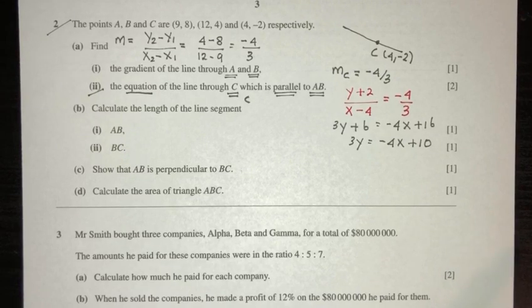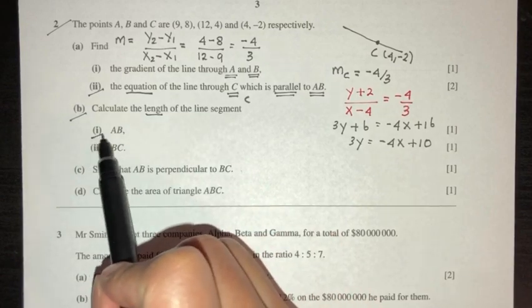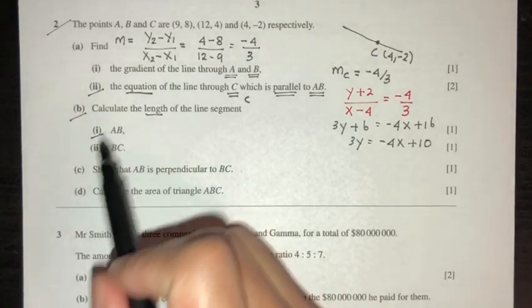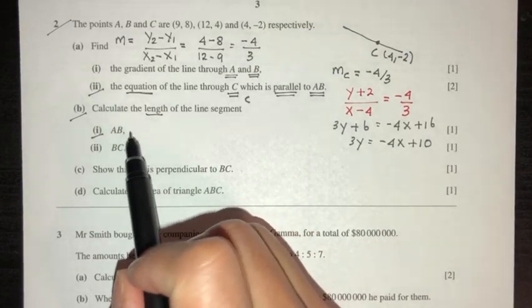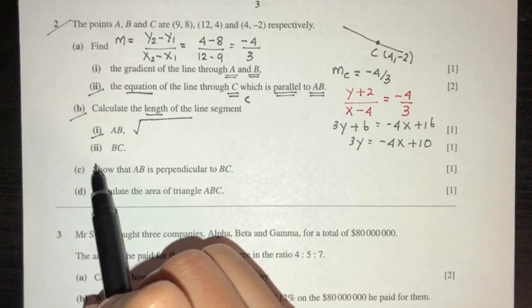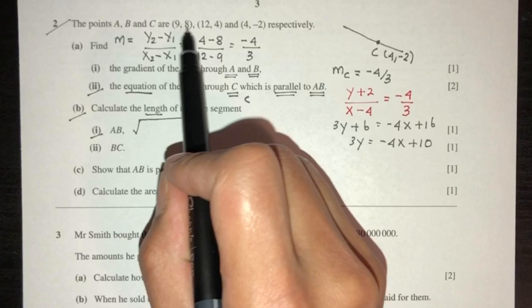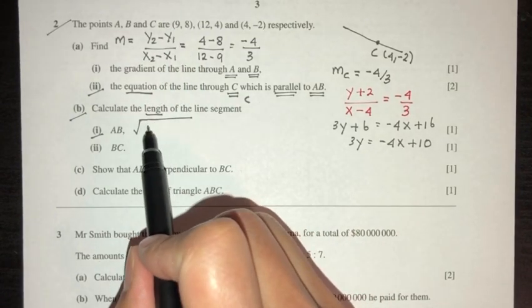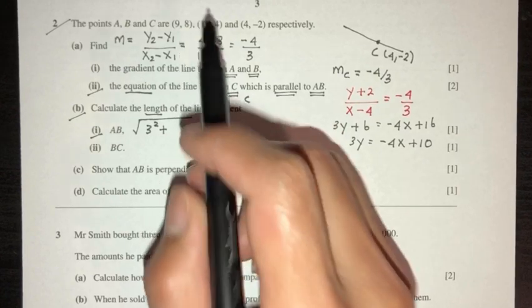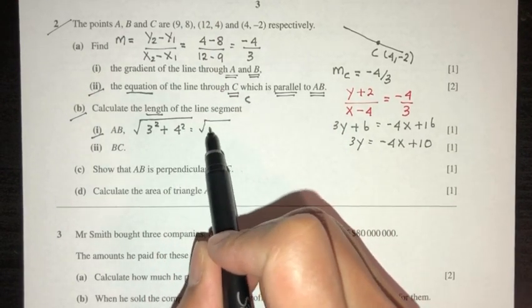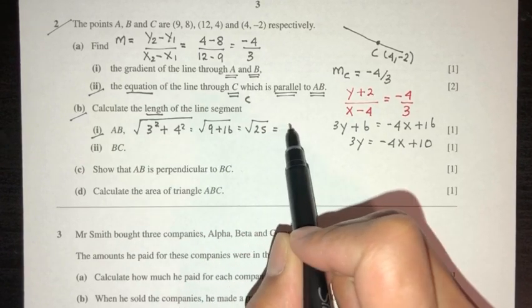Now let's move on to part B. Calculate the length of the line segment. First one is AB. So pretty easy. To find this length, we can use our formula. So AB is square root. We know the points. So let's do x2 minus x1. That will be 3 square plus 4 minus 8 is minus 4 square. So 4 square. That should be 9 plus 16. That will be 25. So your answer will be 5.